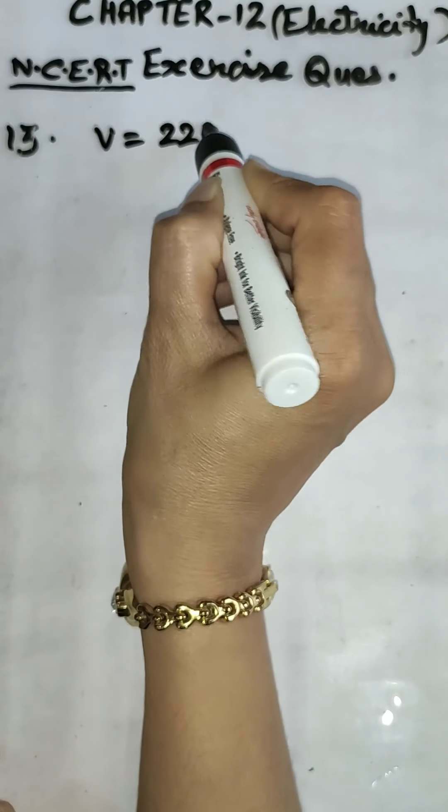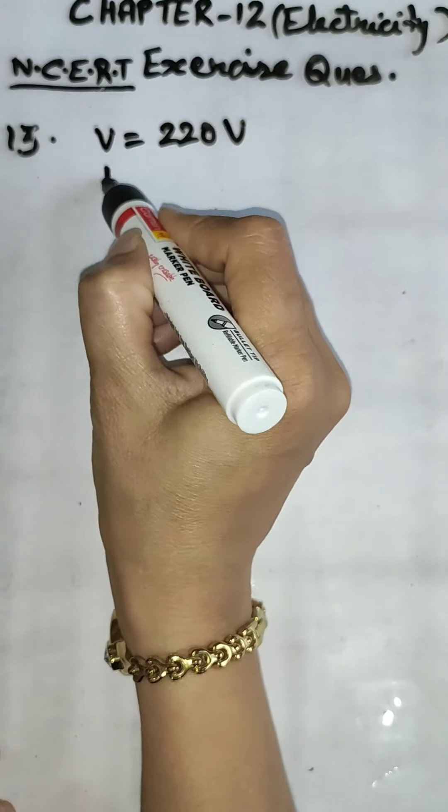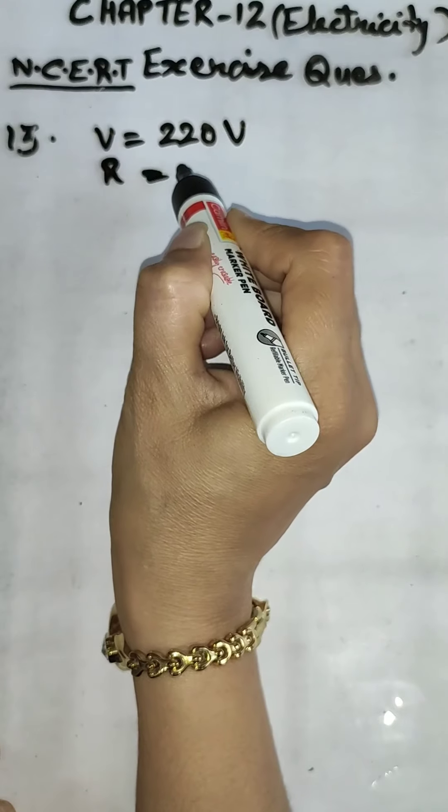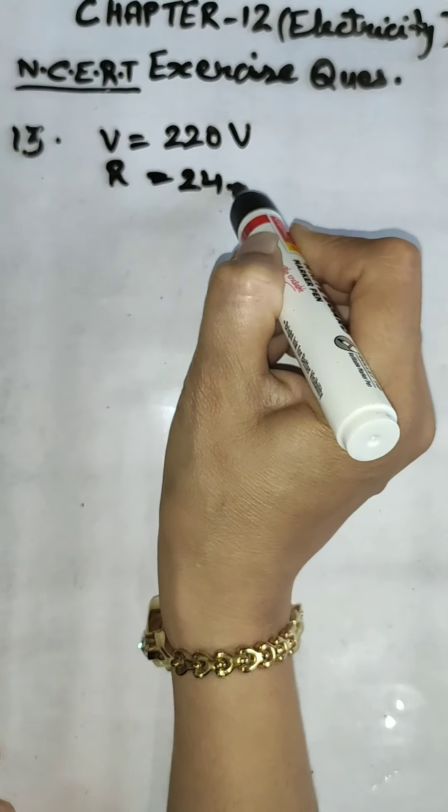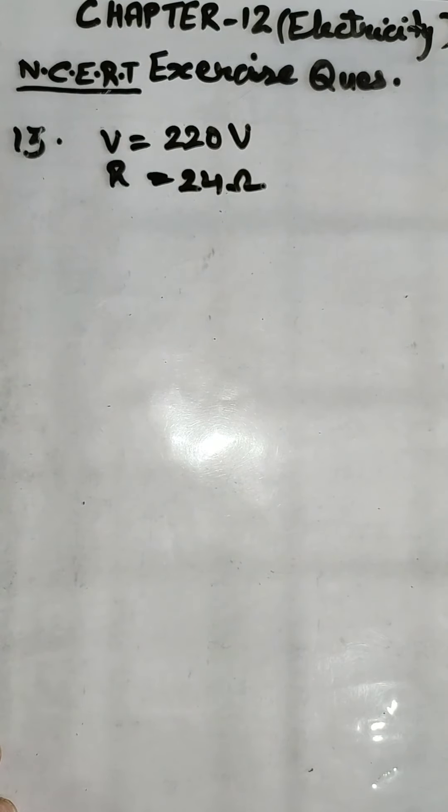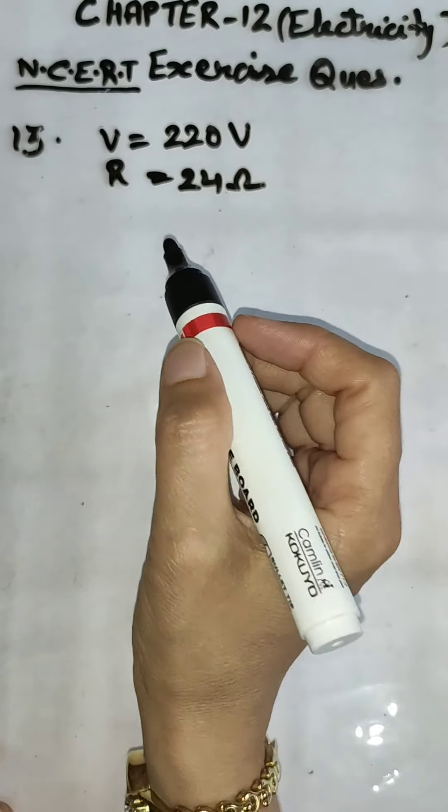We have given V equal to 220 volt and resistance of each is 24 ohm. This thing has been given to us.